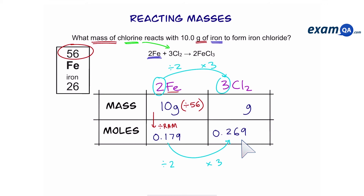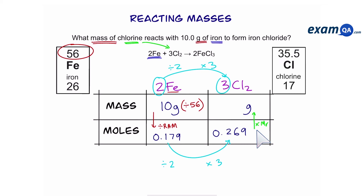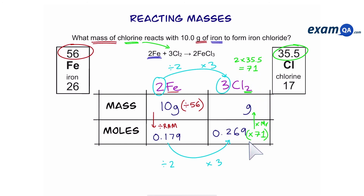The final part is to convert moles into mass, meaning we multiply by the MR. Chlorine, from the periodic table, is 35.5. Remember, we have two chlorines in this molecule, so it's 35.5 times 2, making the MR 71. Multiply your moles by the MR: 0.269 times 71 gives you the final answer of 19.1 grams.